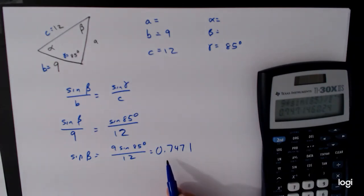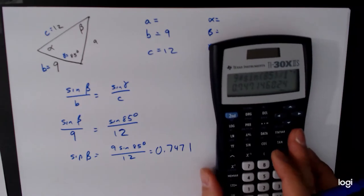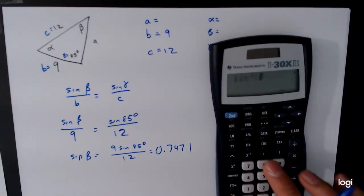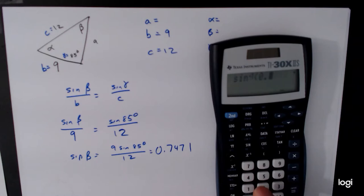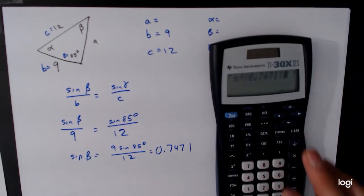This number is between 0 and 1, so there are two possible cases that we have to think about. So we'll take the inverse sine of this first, so inverse sine of 0.7471 and I'm still in degrees, degrees.